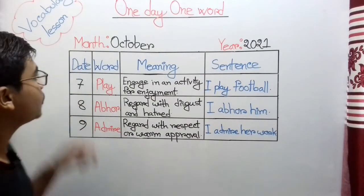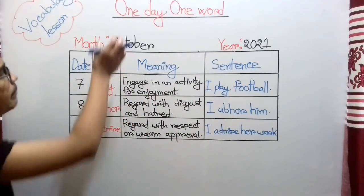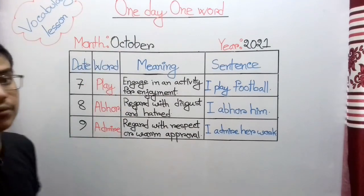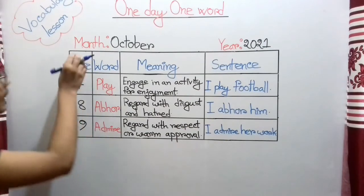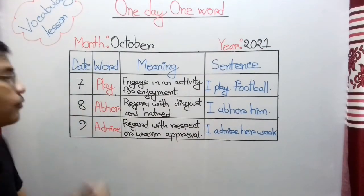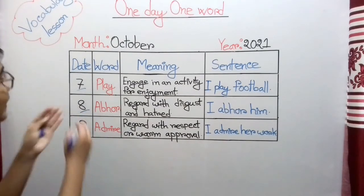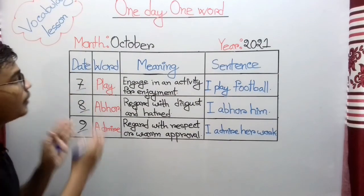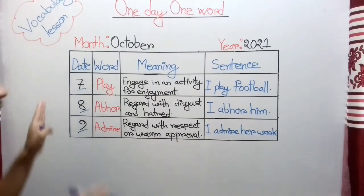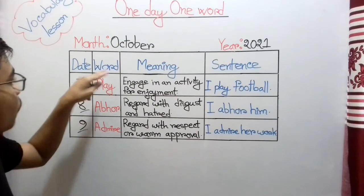In the template, first I have mentioned the month — which month you are learning these vocabularies — and then the year. You can see here the dates. I have only mentioned the date of that day, like seven, eight, nine. I didn't write the month or year name there because I have already written the month and year name above.